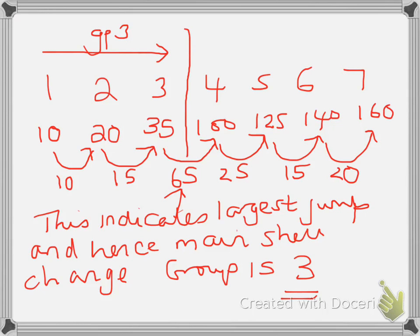We have a look at the values of the difference. You notice it goes 10, 15, 65, 25, 15, 20. So you'll notice the 65 is the greatest jump. So we have a count how many electrons we've taken off before this step. So in this case we've taken off 1, 2, 3. So this indicates that this element is going to be in period 3. Sorry, group 3.